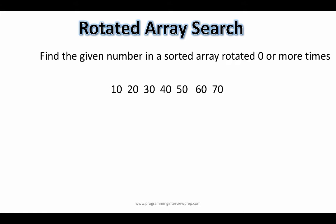So if we take this sorted array and move the last element to the beginning, it is rotated by one. We could keep rotating it n number of times — for example, taking 60 and moving it to the beginning. So given a rotated array like this, how would you go about finding if a given element exists in it?